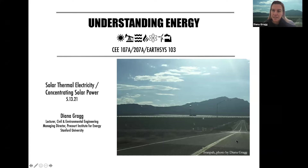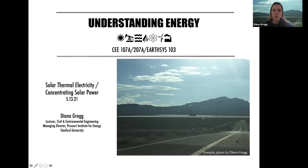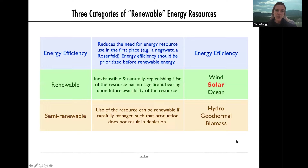Let's talk about solar thermal electricity or concentrating solar power. This is different from other ways that we use solar power — we use solar energy for light, for heat, and with photovoltaics to make electricity. This is a process to make electricity, but instead of using semiconductors like in photovoltaics, here we are using the thermal energy from the sun — heating up fluids in order to produce electricity. So it is called solar thermal electricity.